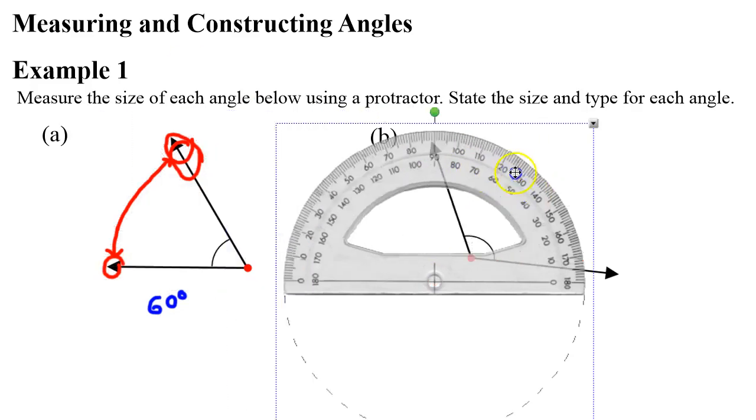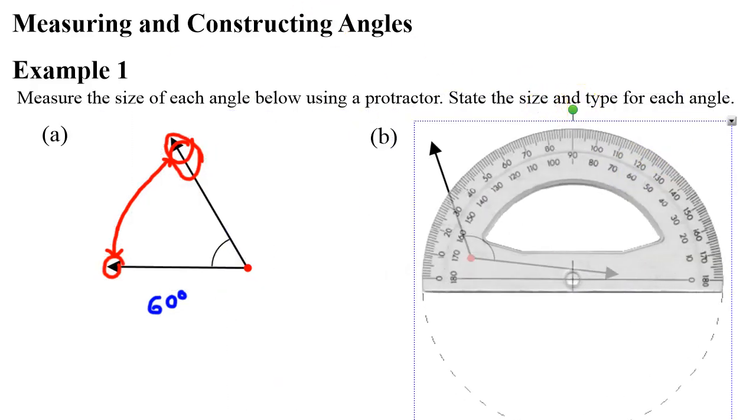Remember, we're not just measuring the size of the angle, we're also stating the type of the angle, so we also need to write that this is an acute angle, acute meaning less than 90 degrees.